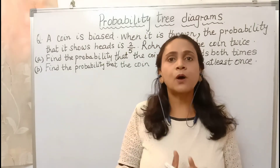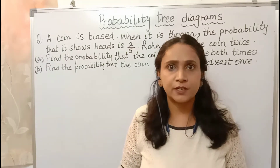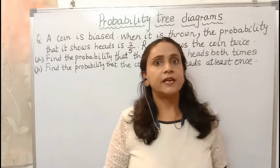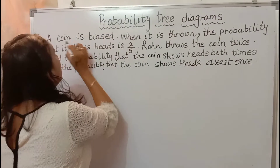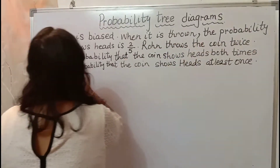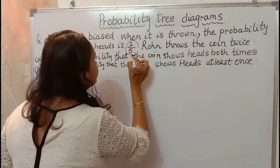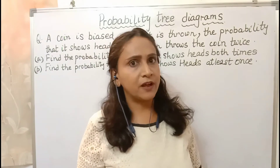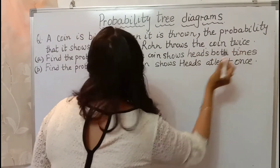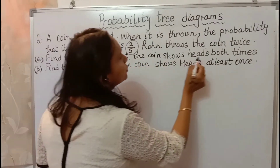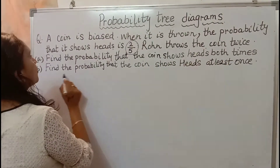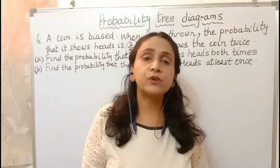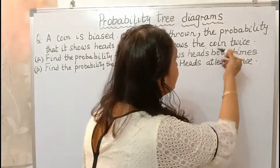Now, what is probability? Probability is the possibility or chance of the occurrence of any event. Now children, here I have a question. A coin is biased — when it is thrown, the probability that it shows heads is 2 by 5. Ron throws the coin twice. Find the probability that the coin shows heads both times. Find the probability that the coin shows heads at least once. You have to understand the difference between these two questions.